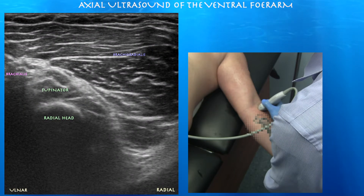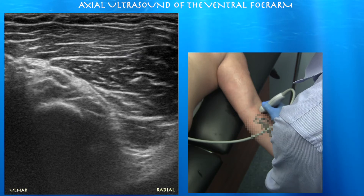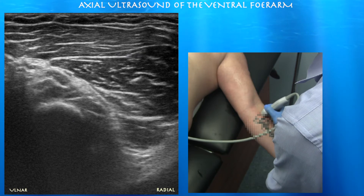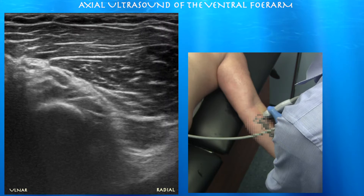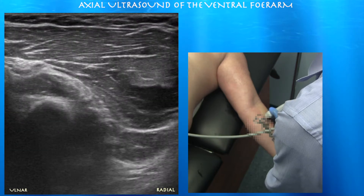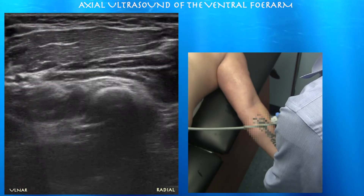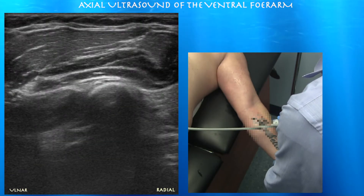Radial head. Here we're going a little bit distally and you can see the supinator muscle overlying the radial head. You can see the brachioradialis muscle above it, and again that big muscle overlying the radius is your brachioradialis muscle.